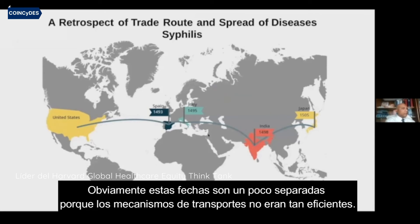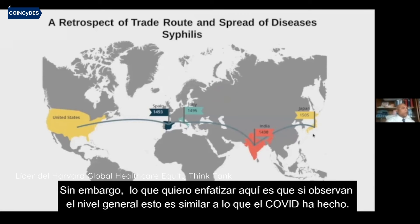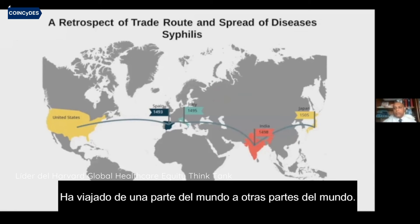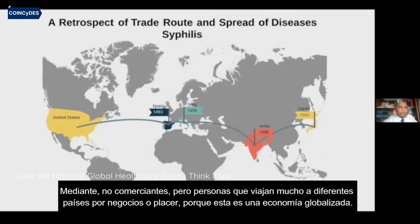These dates are staggered because transport was not as efficient, but what I would like to emphasize is that from a high level, this is similar to what COVID has done. It has traveled from one part of the world to another — not just by traders, but by people who travel frequently between countries for business or pleasure, because this is a globalized economy.